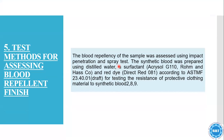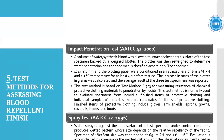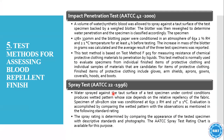Test method for assessing blood repellency: blood repellency of the sample was assessed using the impact penetration and spray test. Synthetic blood was prepared using distilled water with surfactant, according to ASTM standards for testing the resistance of clothing material to synthetic blood. The tests used are the impact penetration test and the spray test. In the water spray test, water is sprayed on the surface of the test specimen under controlled conditions, and the spray rating is determined by comparing the appearance of the test specimen against descriptive standards and photographs.